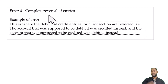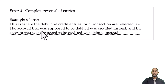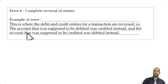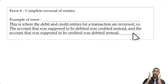The last error that will not affect agreement of the trial balance is complete reversal of entries. This is where the debit and credit entries for a transaction are reversed — the account that was supposed to be debited is credited, and vice versa. For example, for a cash sale you should debit cash and credit sales, but if you debit sales and credit cash, that's a complete reversal.